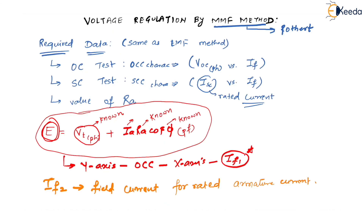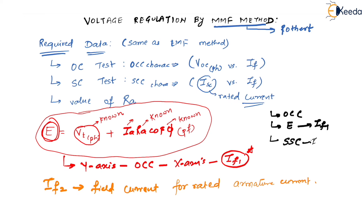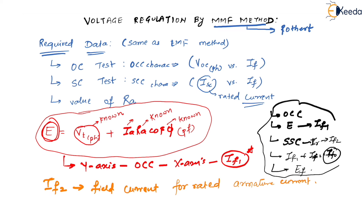Let us revise the steps: Step 1 — find and plot OCC. Step 2 — find E = VT + IA·RA·cos φ. Step 3 — from E, find IF1 on OCC. Step 4 — plot SCC and from rated current find IF2. Step 5 — add IF1 and IF2 as phasors to get IF0. Step 6 — locate IF0 on OCC to get EF. This is the complete procedure. We will solve numerical examples in the next session.